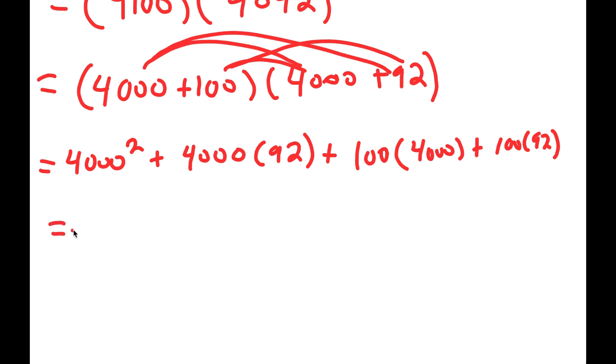Now from here, 4000 squared is going to equal 16 million. Plus, 4000 times 92 is going to be 368,000. Plus, 100 times 4000 is going to be 400,000. Plus, 100 times 92 is 9200.